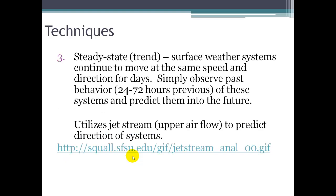The third technique is the Steady State Forecasting Technique, which is good for analyzing trends. This technique basically says that surface weather systems continue to move at about the same speed and direction for several days. So if you observe the past behavior of a low pressure system over the past one to three days, it's easier to predict what that system is going to do for the next day or two. This uses upper air flow to predict the direction of systems — it's really those upper winds that dictate the direction of larger systems like a low pressure system.